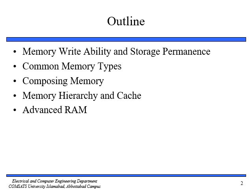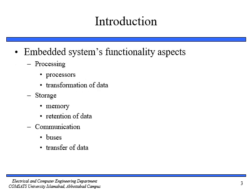In this slide we will discuss the introduction to memories. Any embedded system functionality consists of three aspects: number one is processing, number two is storage, and number three is communication. Processing is the transformation of data, whereas storage is the retention of data for later use, and communication is the transfer of data. Each of these aspects must be implemented — we use a processor for processing, memory to implement storage, and buses to implement communication.